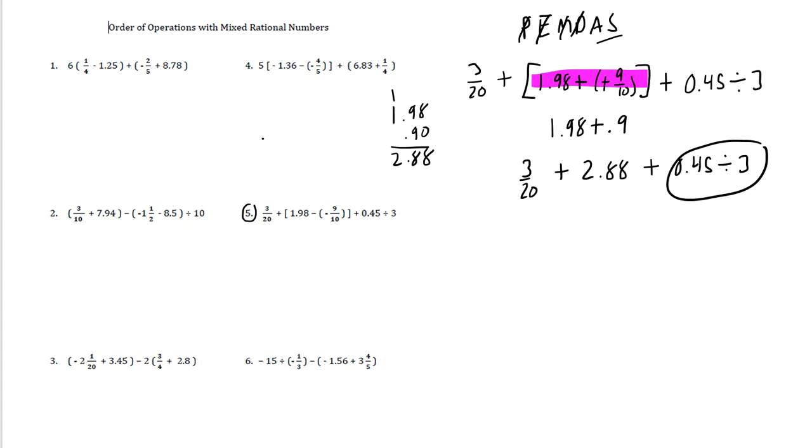0.45 divided by 3. So if I take 0.45 and I divide by 3, the 0.45 is going to go in the box. The decimal goes straight up.